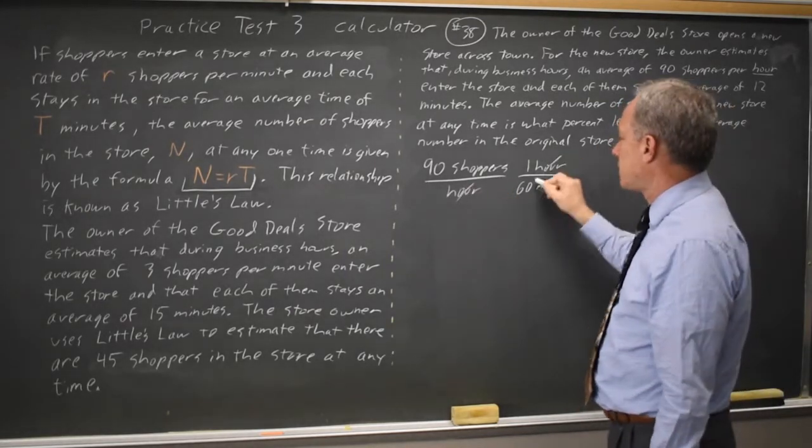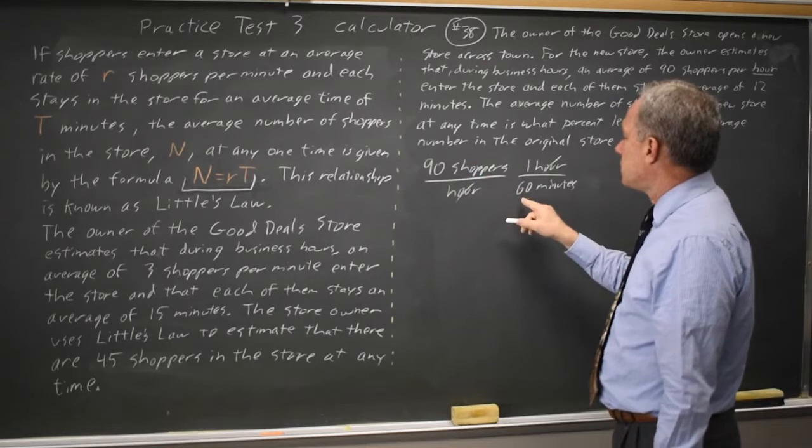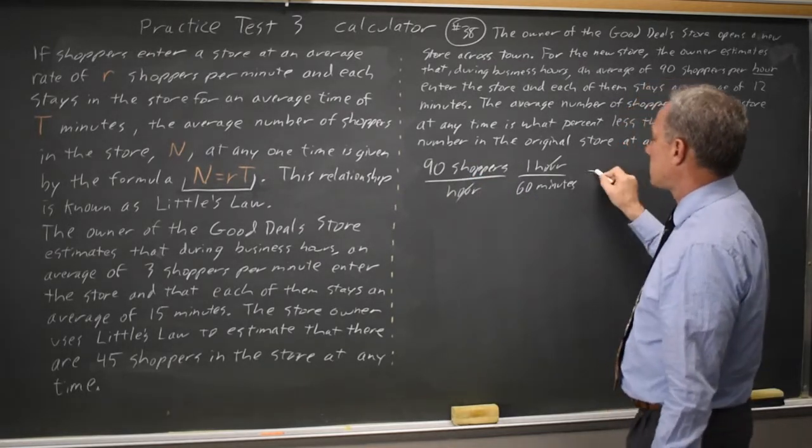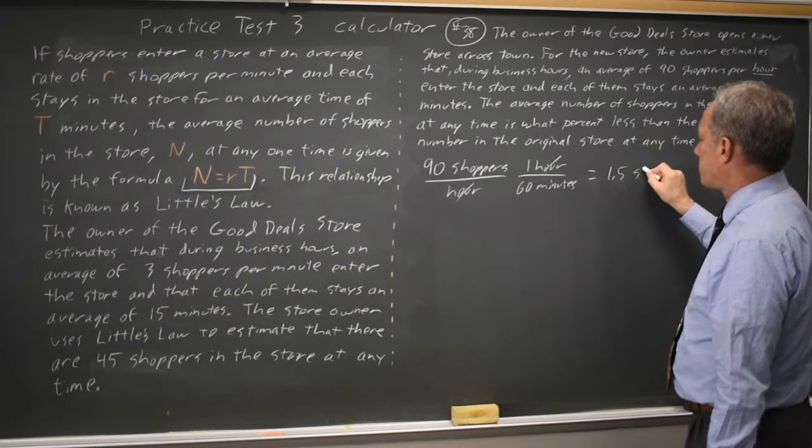Hours cancel, leaving 90 over 60 shoppers per minute, which is 1.5 shoppers per minute.